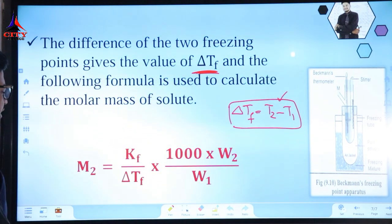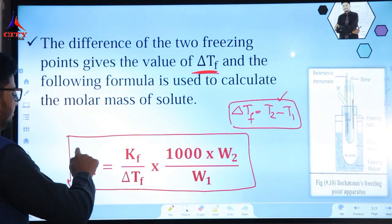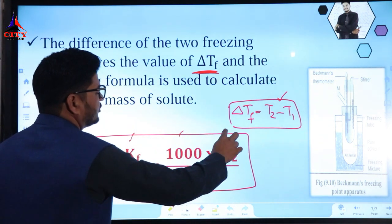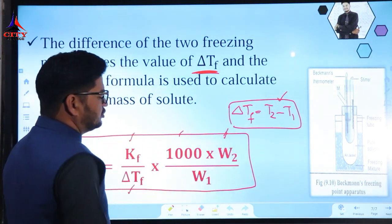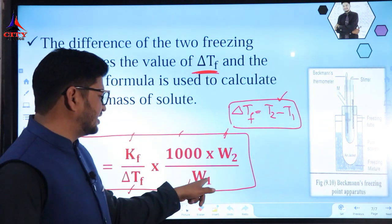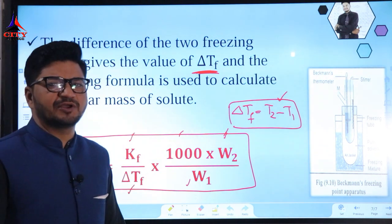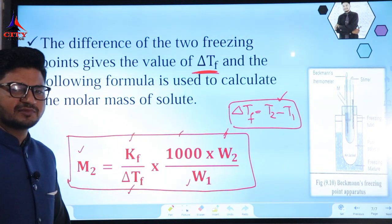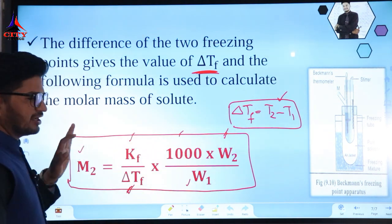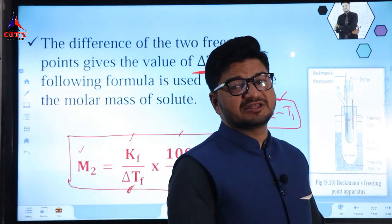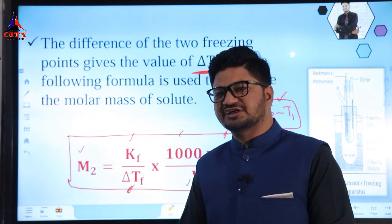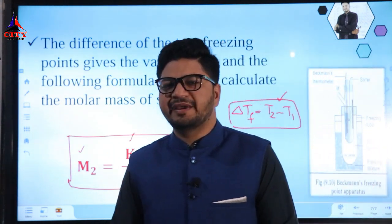W2 is the mass of solute and W1 is the mass of solvent. We can use the following formula to calculate the molar mass of solute: M2 = (Kf × 1000 × W2) / (ΔTf × W1). The Kf value for water is 1.86. Using this formula, we can find out the molar mass of the substance.